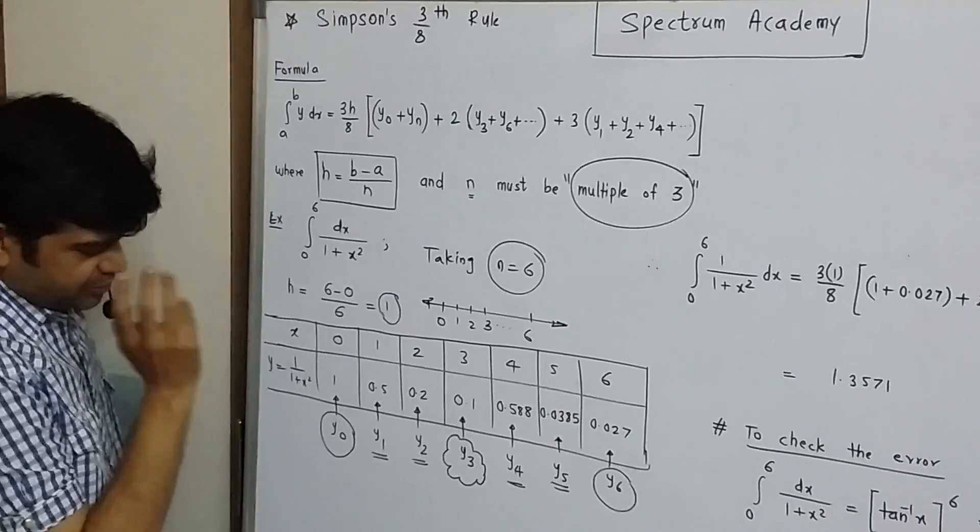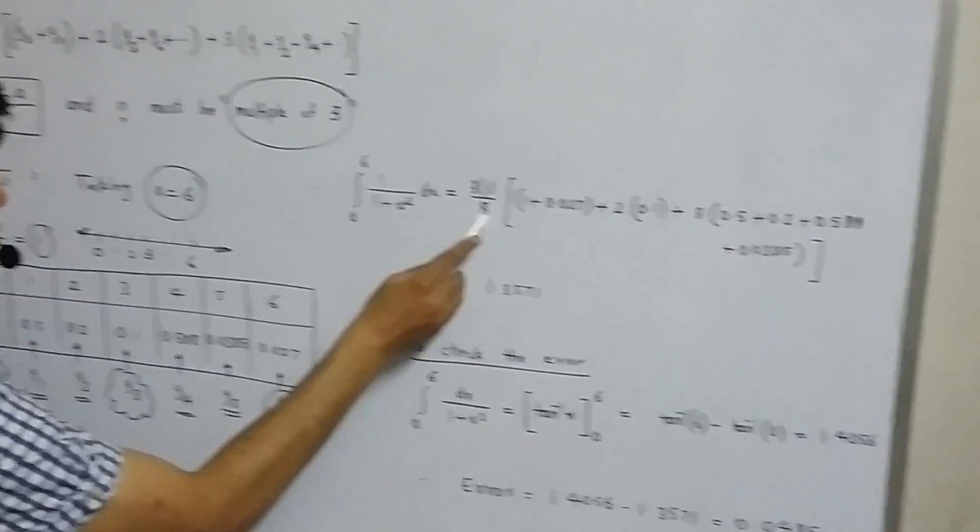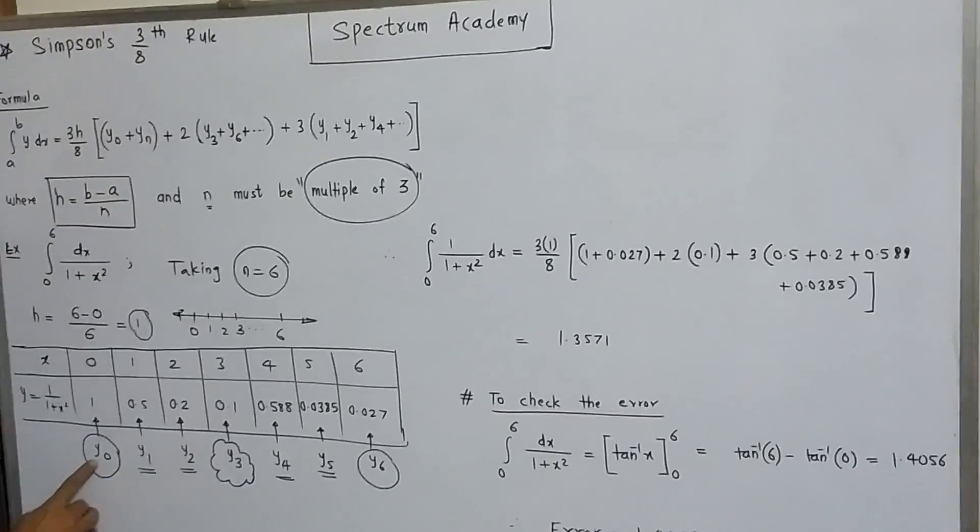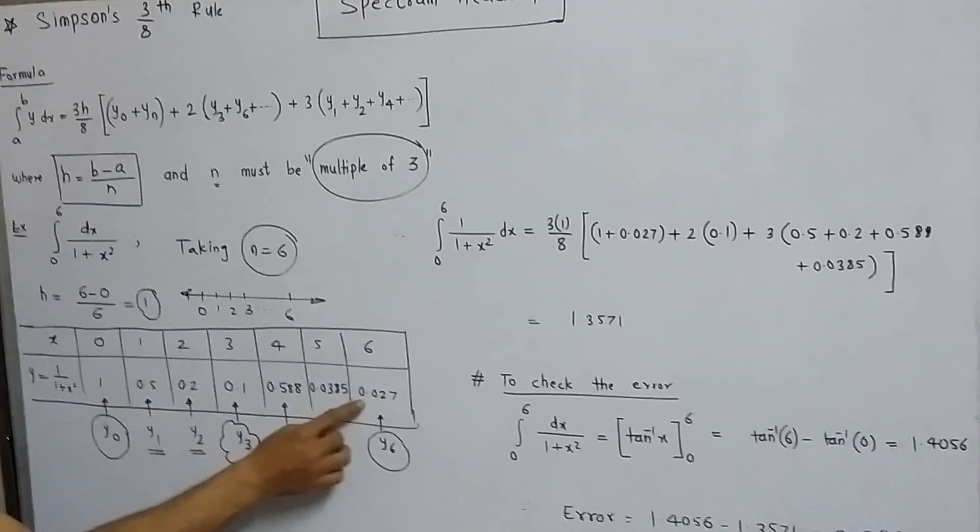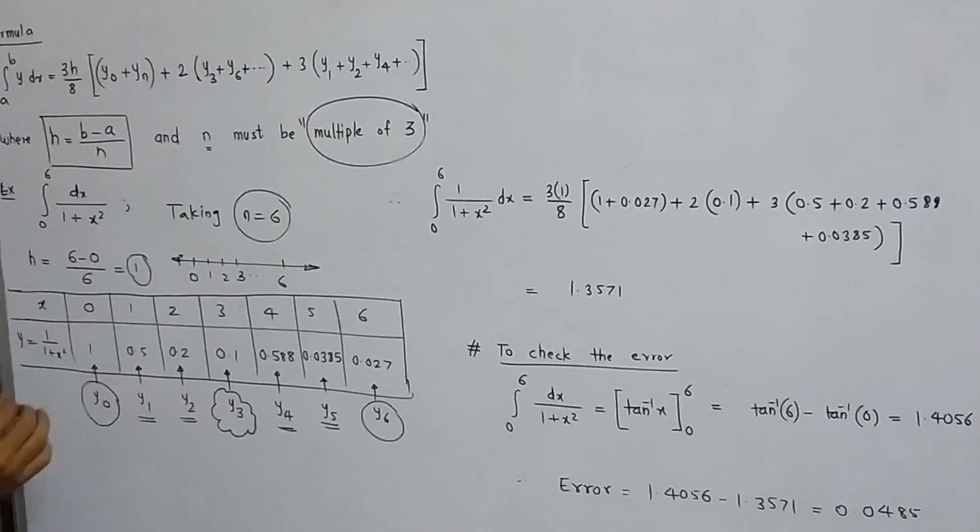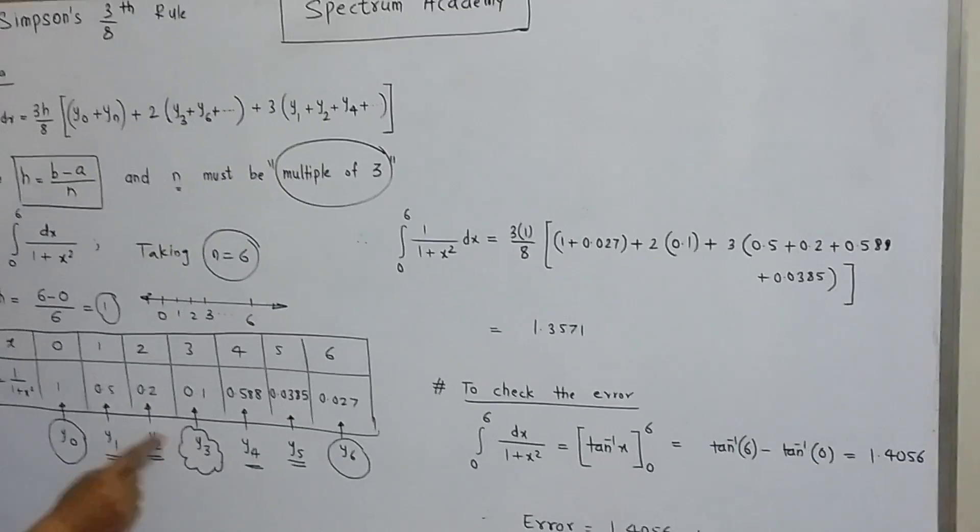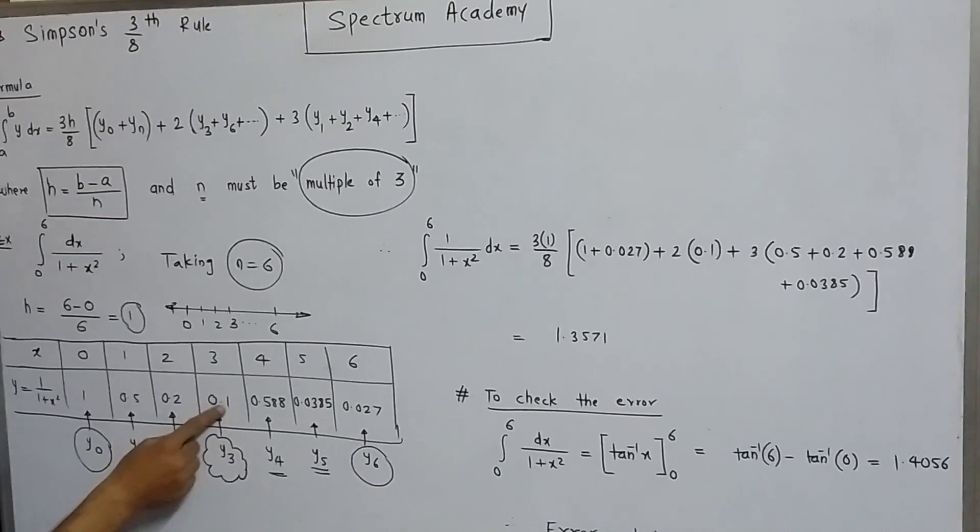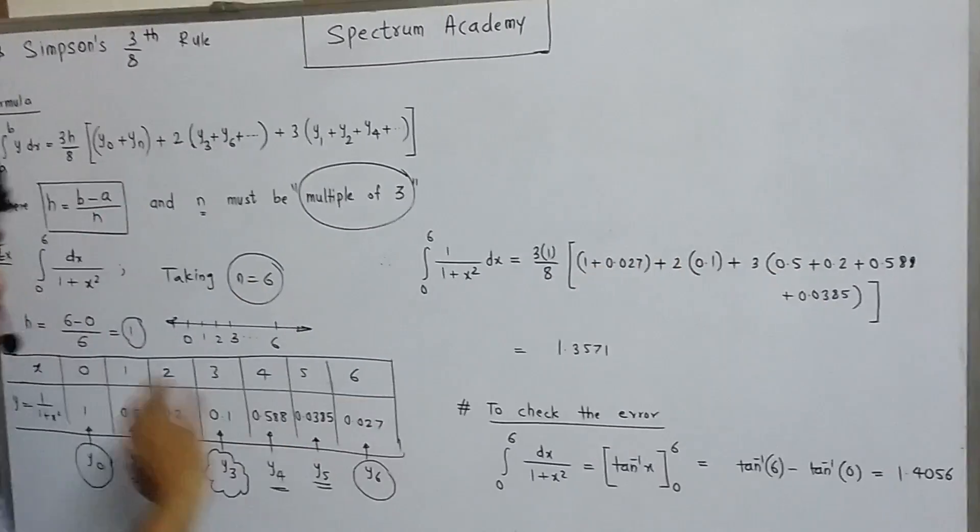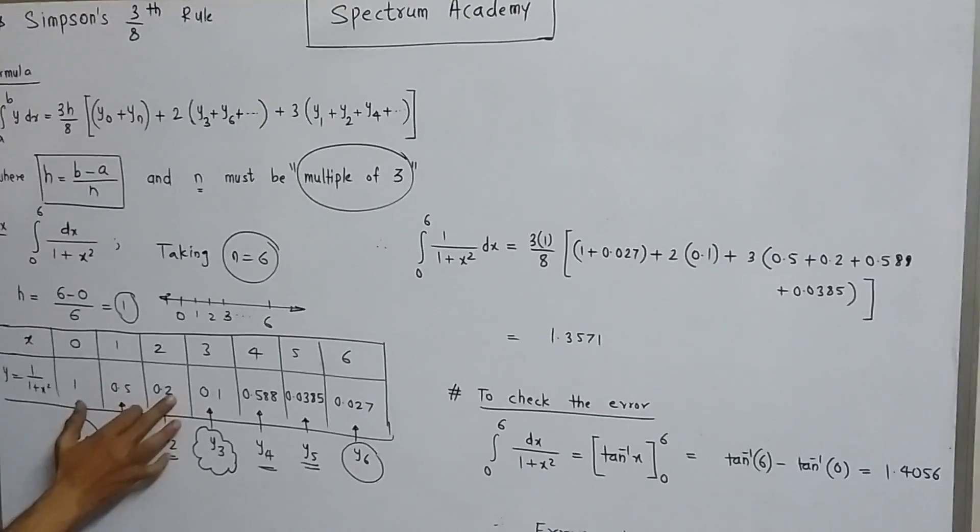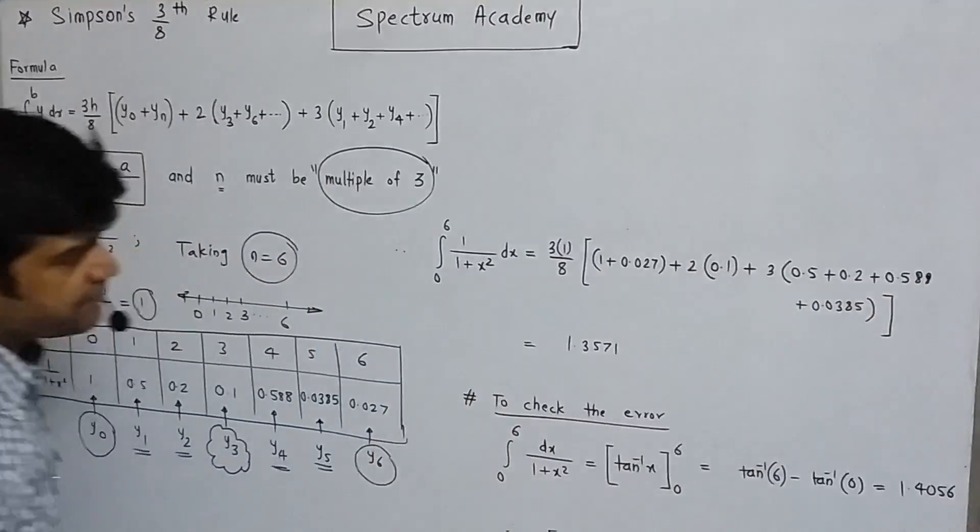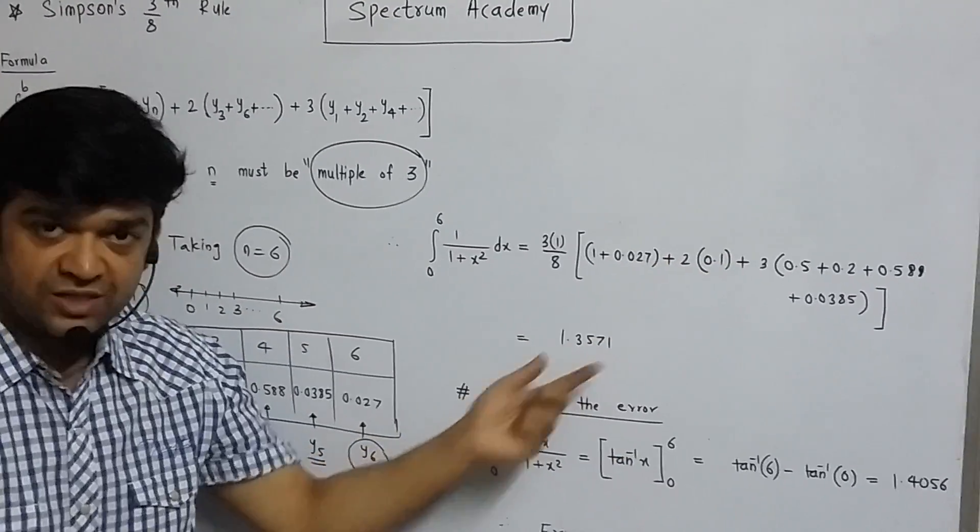So let us put in the formula 3 into h upon 8, h value is 1. Sum of extreme ordinates that is 1 and 0.27 plus 2 times ordinates which are multiple of 3. There is only one ordinate which is multiple of 3, y3, so it is 0.1 plus 3 times remaining all the ordinates. We calculate using calculator we get this answer.